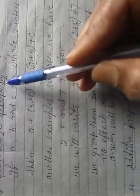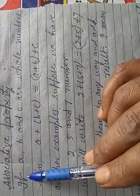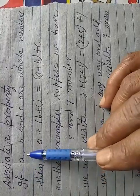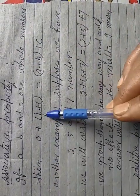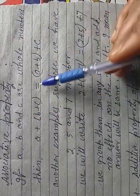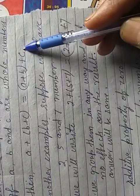Now next is associative properties of addition. Here we have to take three digits, three numbers. If a, b and c are whole numbers, then we can write a plus in the bracket b plus c is equal to a plus b in the bracket and plus c.